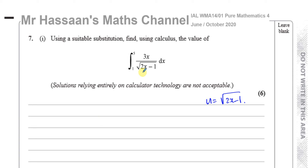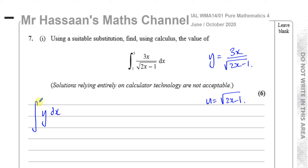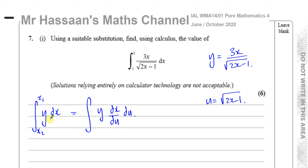When we integrate something with respect to x using substitution, I'm going to call what we're integrating y first. So y equals 3x over the square root of 2x minus 1. We have to find the integral of y with respect to x with limits x1 and x2. That is equivalent to the integral of y times dx/du, du, with limits in terms of u — and the y and dx/du all have to be expressed in terms of u.